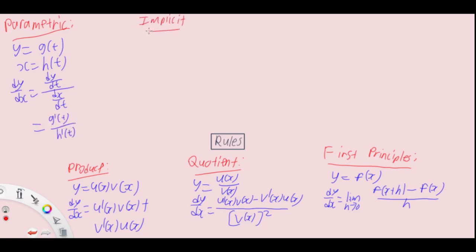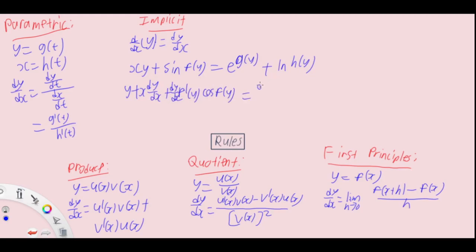Lastly, implicit differentiation. The core idea is that d dx of y equals dy dx. If we have an equation xy plus sine fy equals e to the power of gy plus ln hy, apply the basic rules. Product rule gives y plus x dy dx plus f prime y times dy dx times cosine fy equals g prime y times e power of gy times dy dx, and lastly plus h prime y over hy times dy dx.